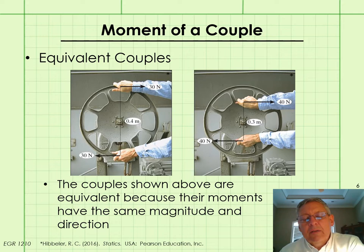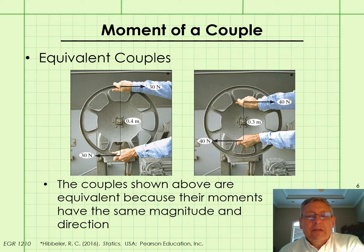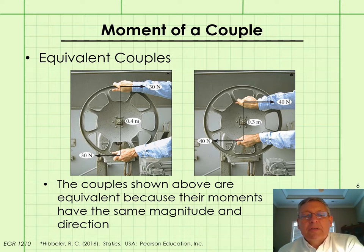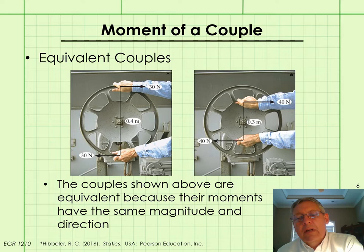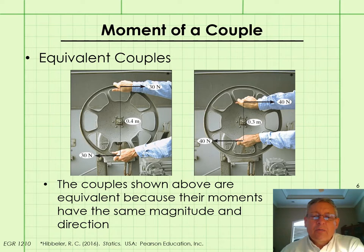Couples are said to be equivalent when their couple moments have the same magnitude and direction. For example, a 30 Newton couple with a distance of 0.4 meters between the lines of action of the forces produces the same couple moment as a 40 Newton couple with a distance of 0.3 meters between their lines of action. So these two couples are said to be equivalent.